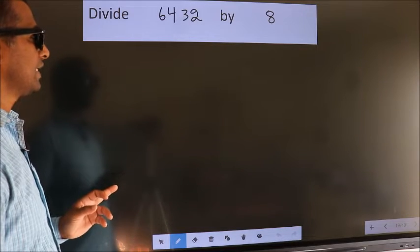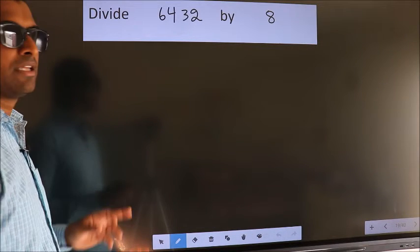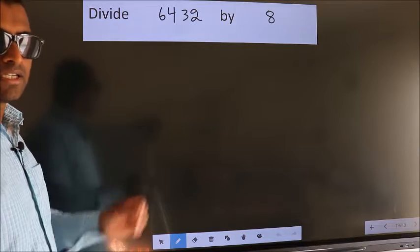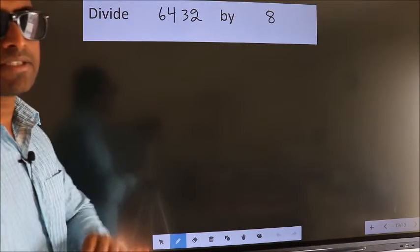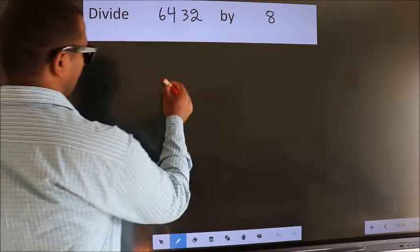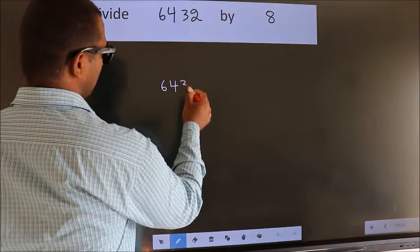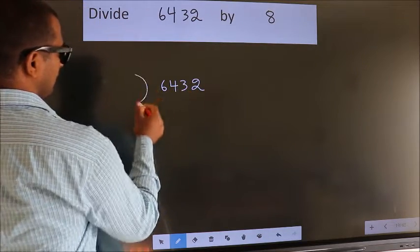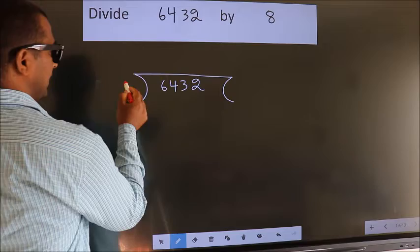Divide 6432 by 8. To do this division, we should frame it in this way. 6432 here, 8 here.